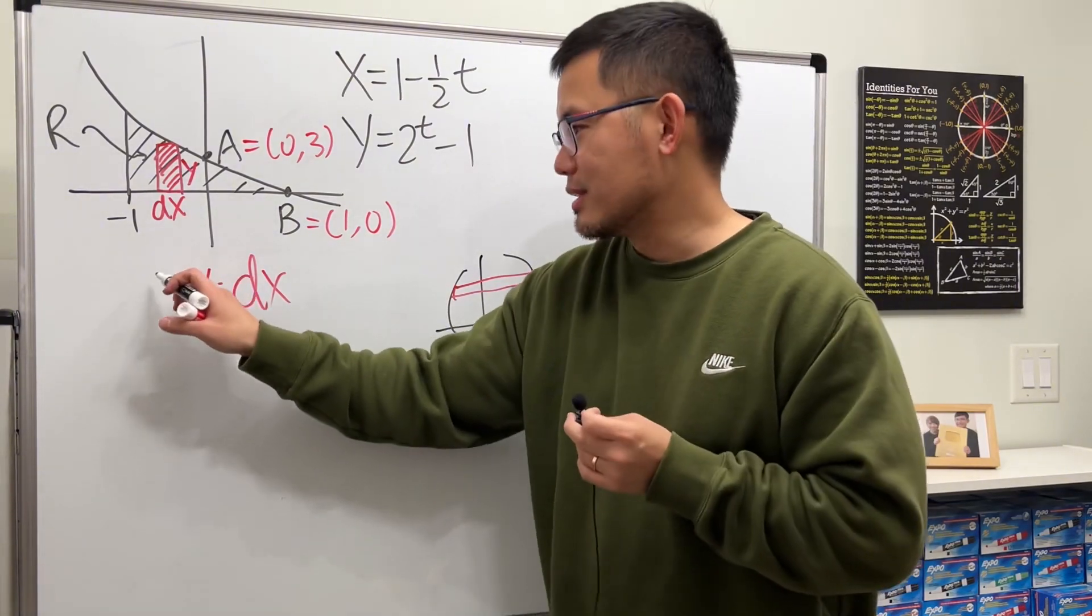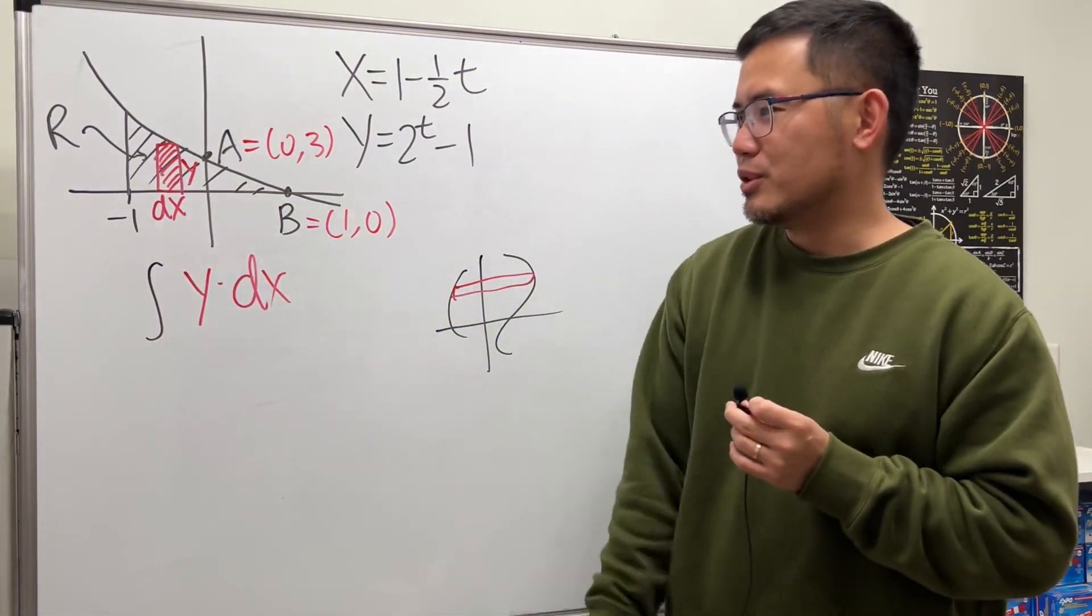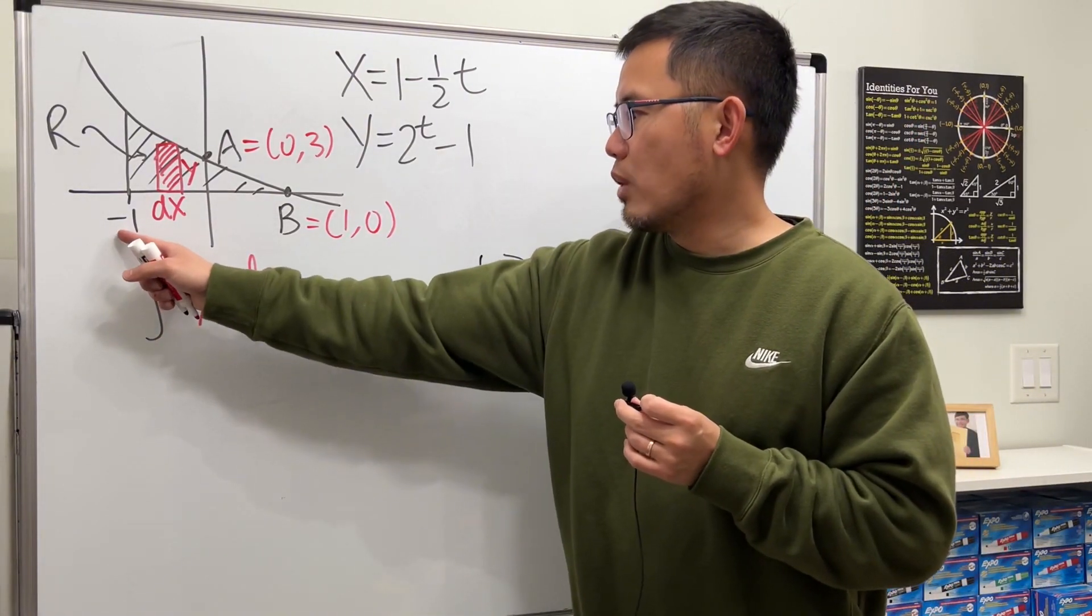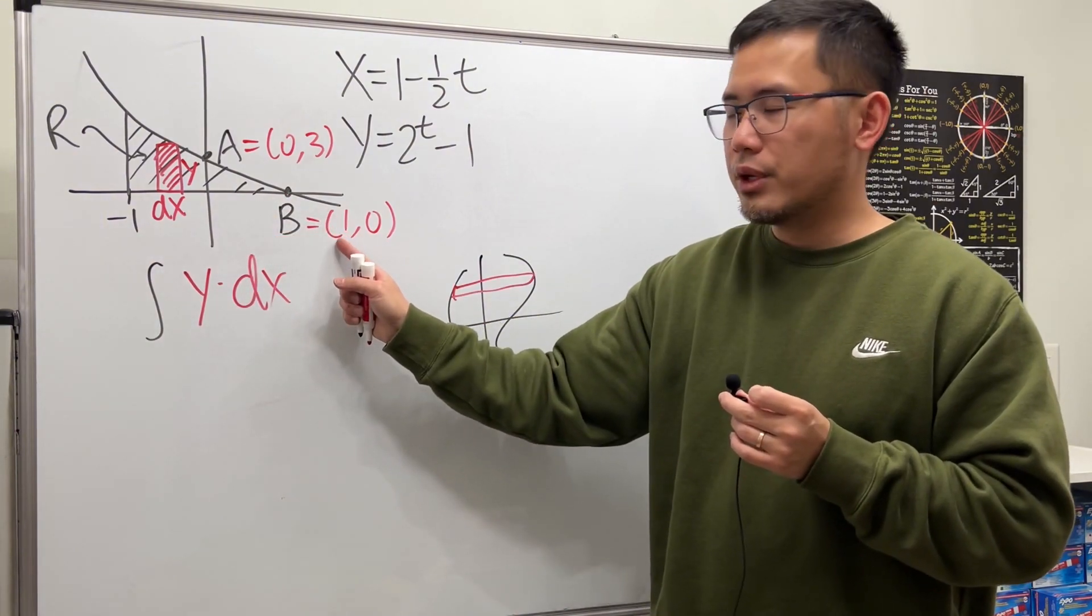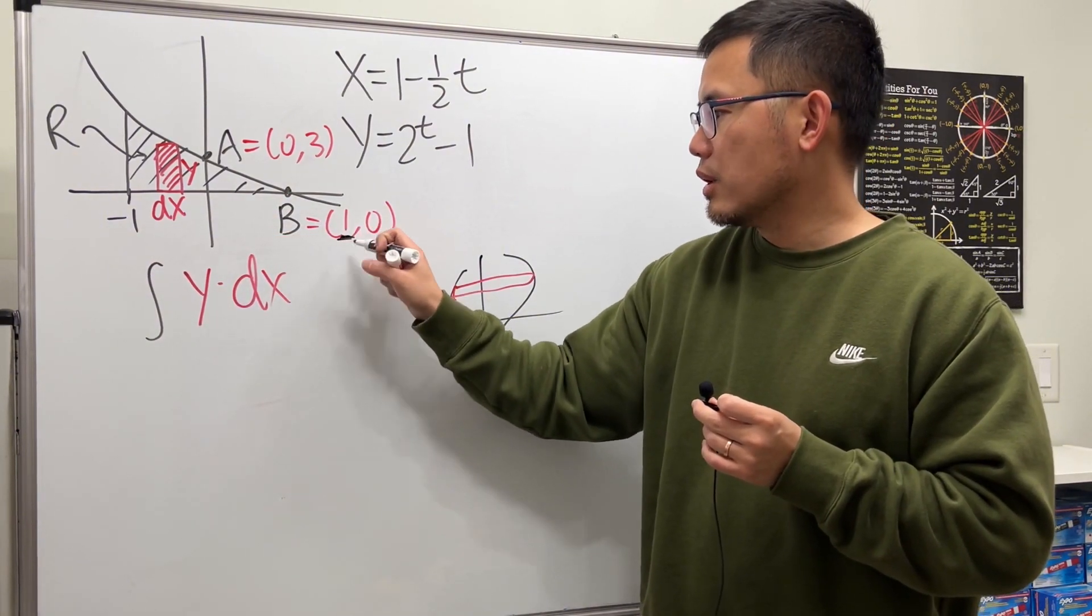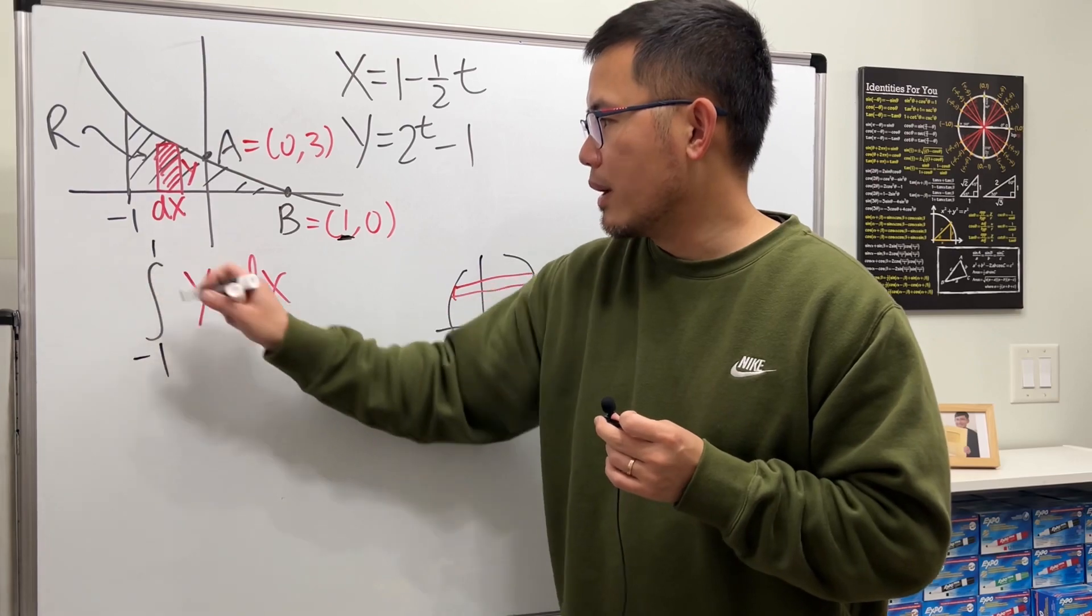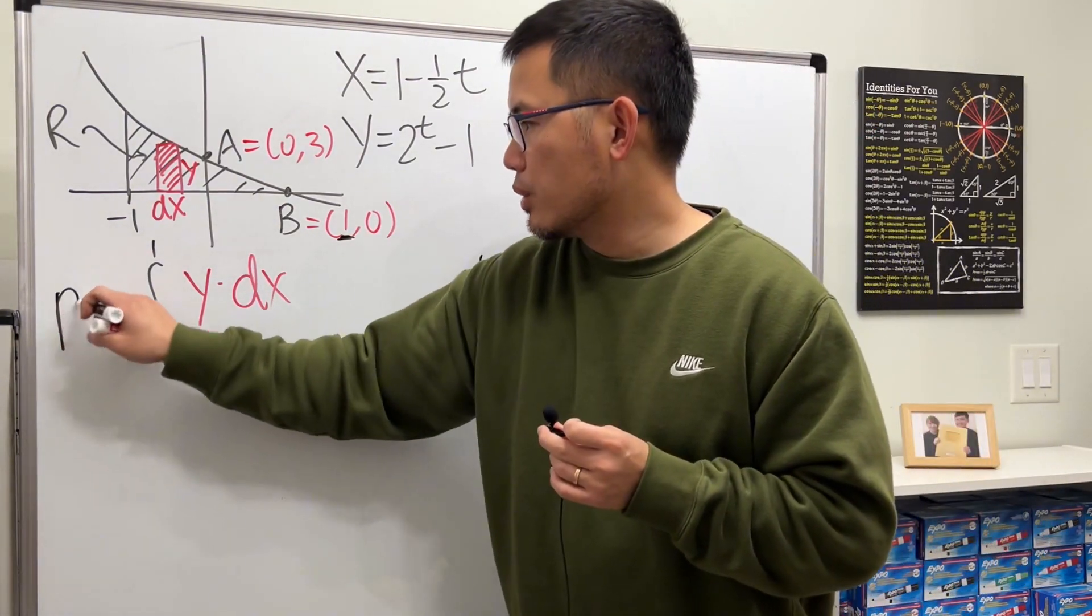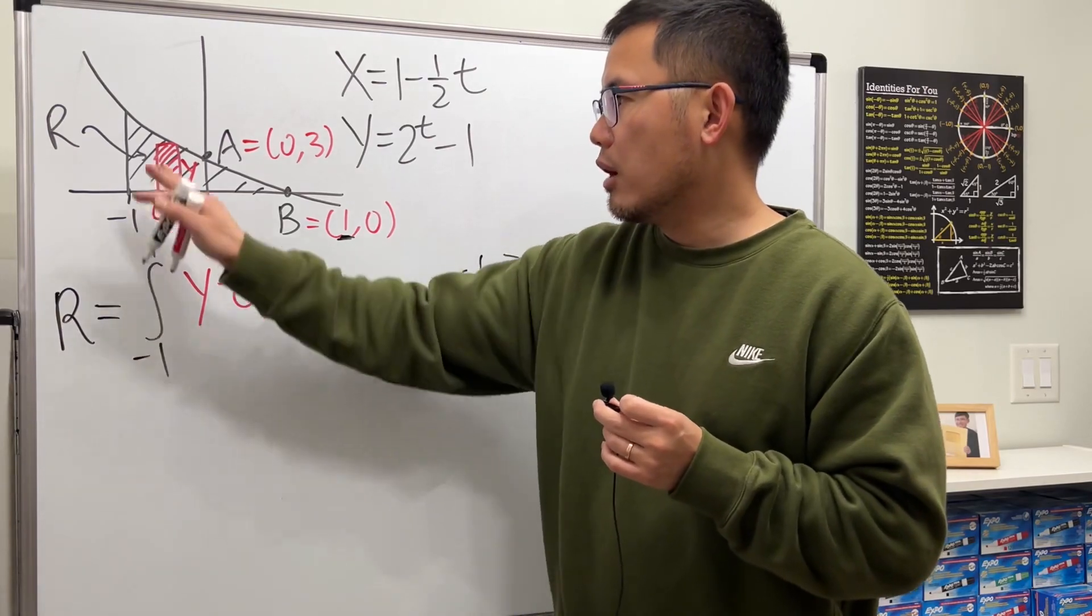Integrating from negative 1, and pay attention to the x-axis here, to 1. So from negative 1 to 1. Because we are in the x world, this will give you the area of R.